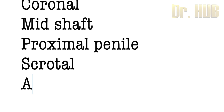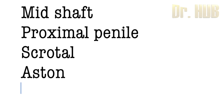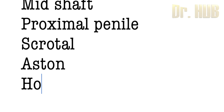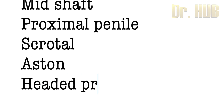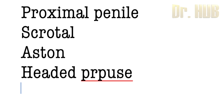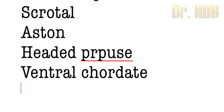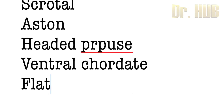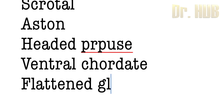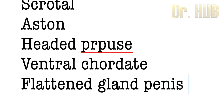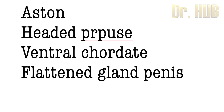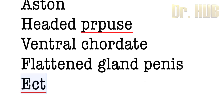Associations: it includes a hooded prepuce, and there is a ventral chordee, then comes the flattened glans penis, then comes the microphallus, and the ectopic meatus.